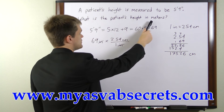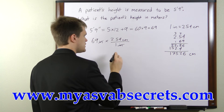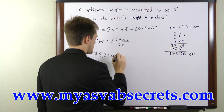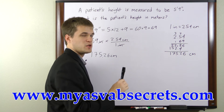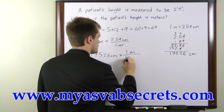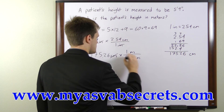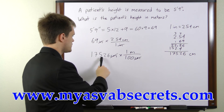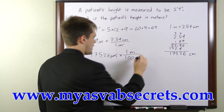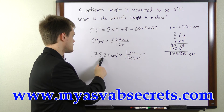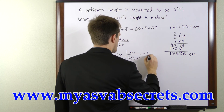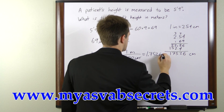Now we're asked for the patient's height in meters. To convert from centimeters to meters we need another conversion factor. There are 100 centimeters per meter, so we'll multiply the number of centimeters times 1 meter per 100 centimeters. The centimeters will cancel and we have 175.26 divided by 100. To divide by 100 we move our decimal point two places to the left, giving us 1.7526 meters.